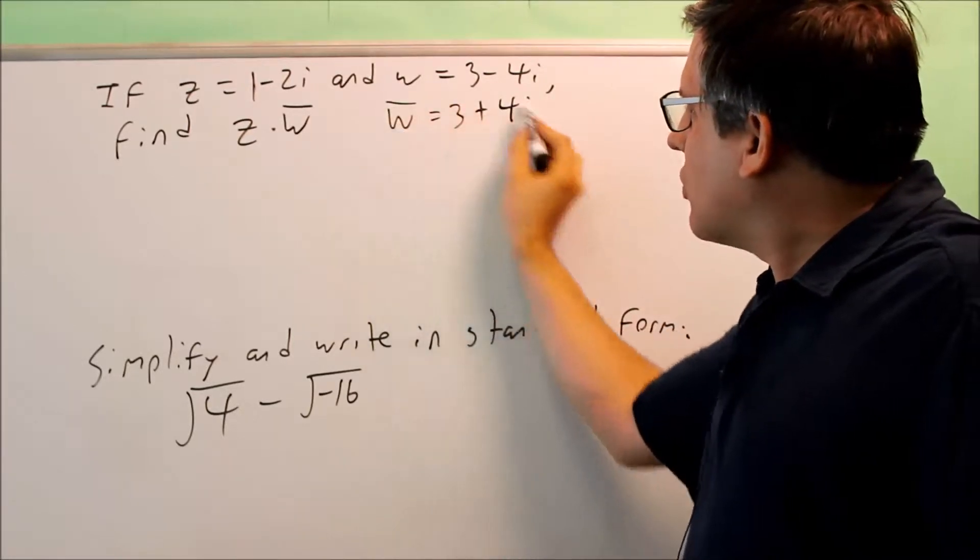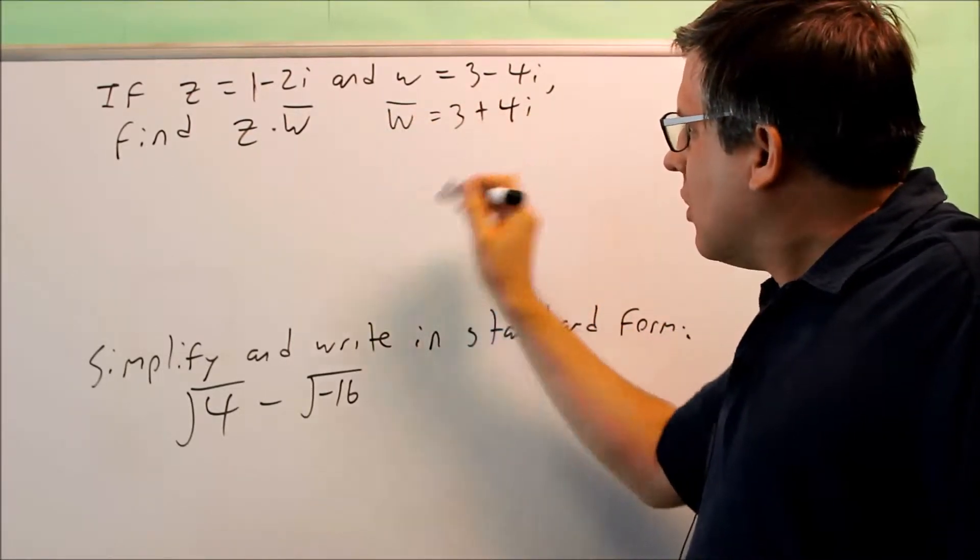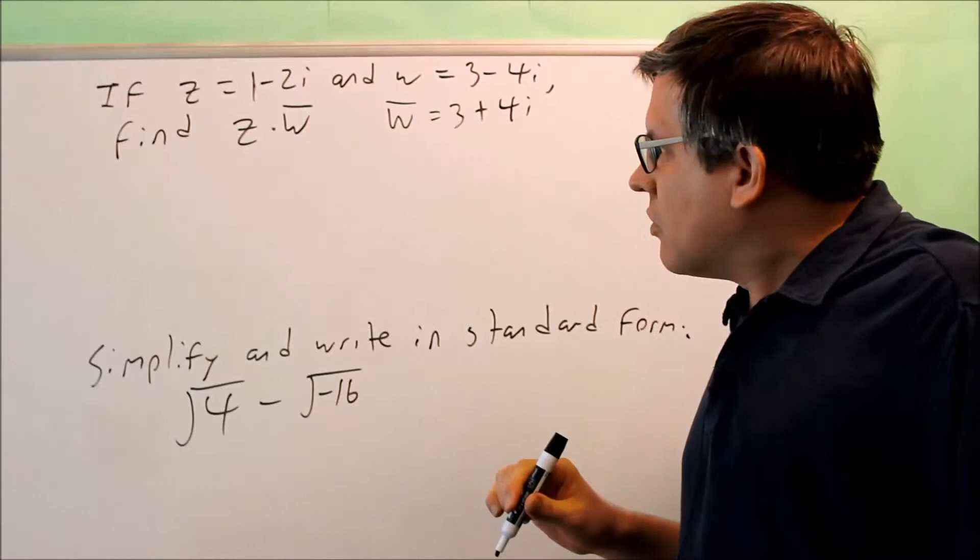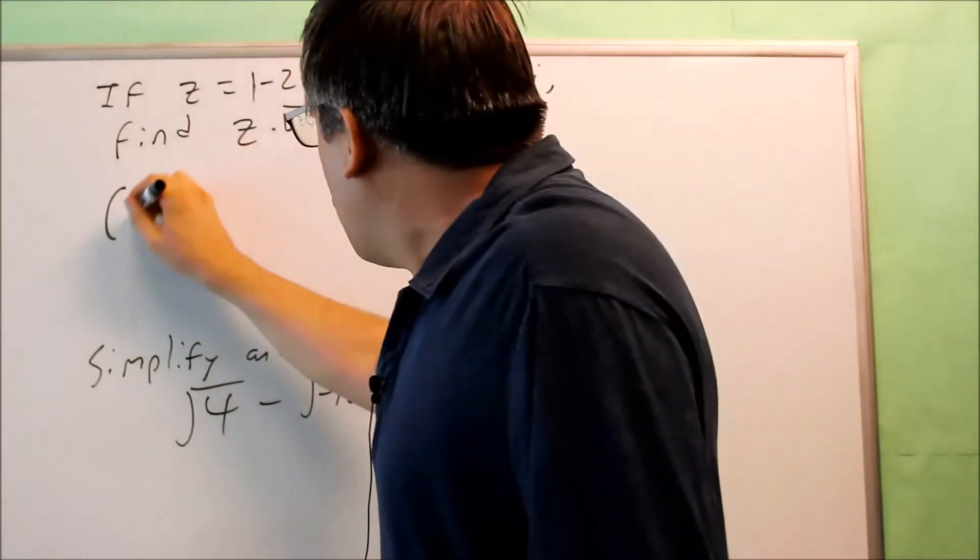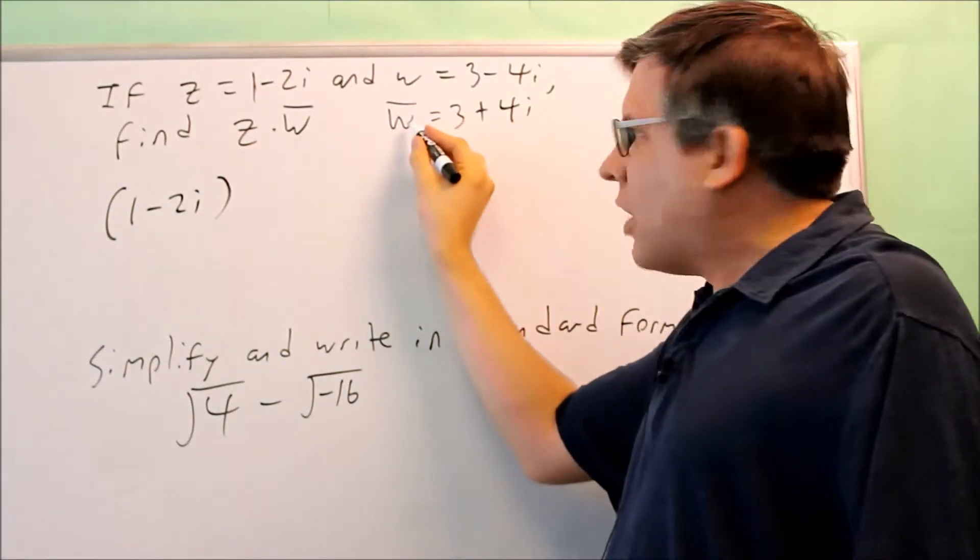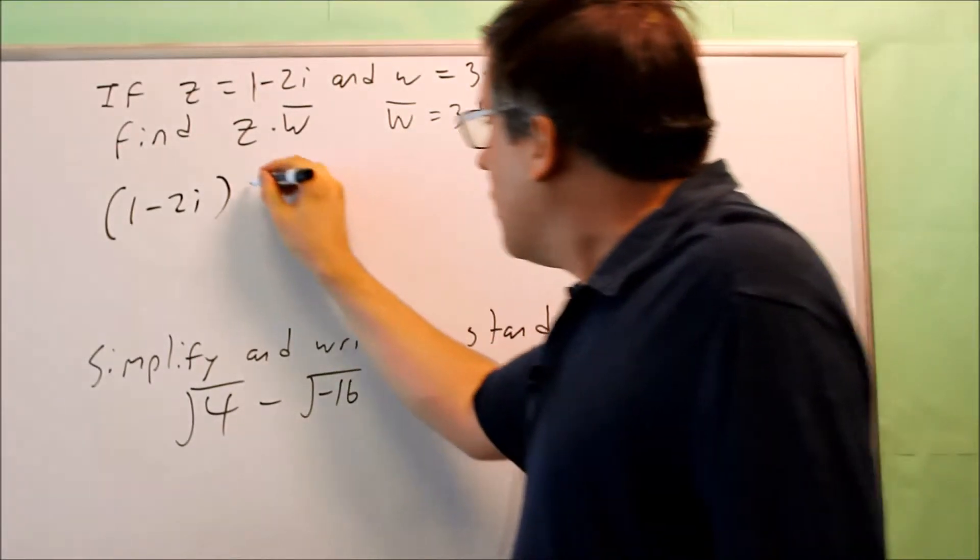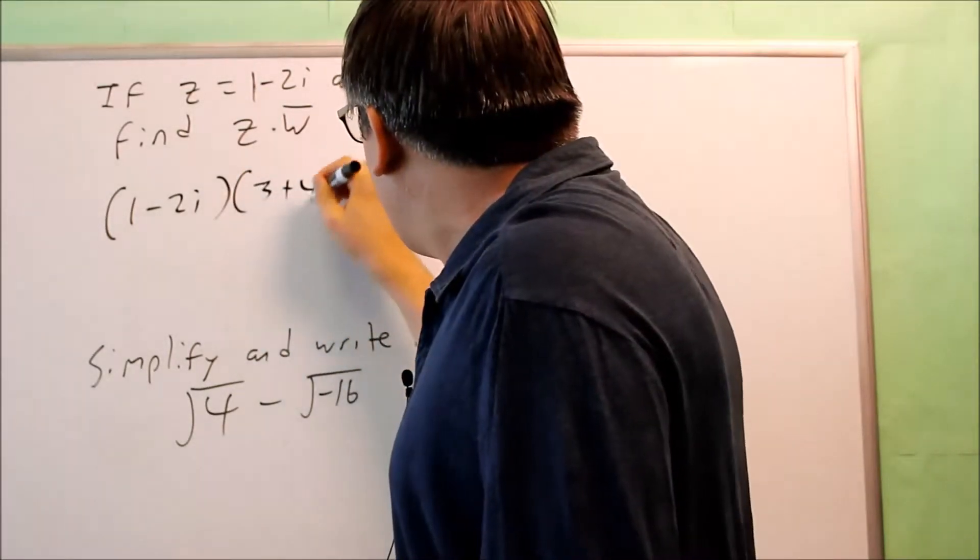So in this case, this is actually what they want us to use. So I'm multiplying these together. So z is going to be 1 minus 2i. And then the w bar, or conjugate of w, is going to be 3 plus 4i.